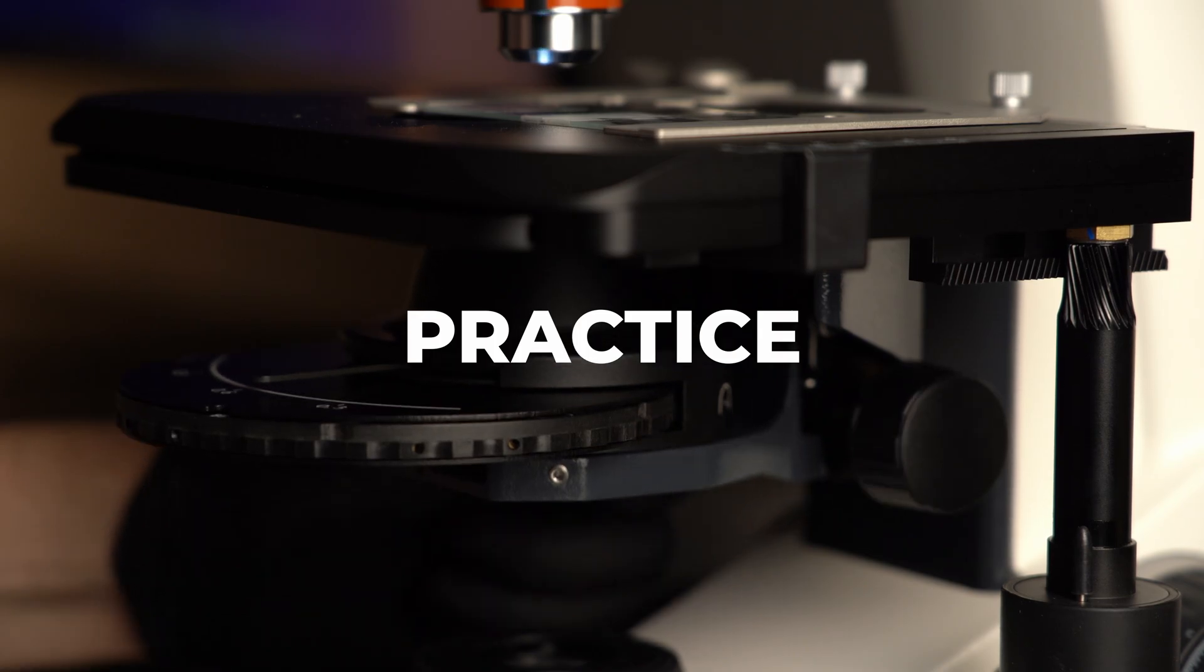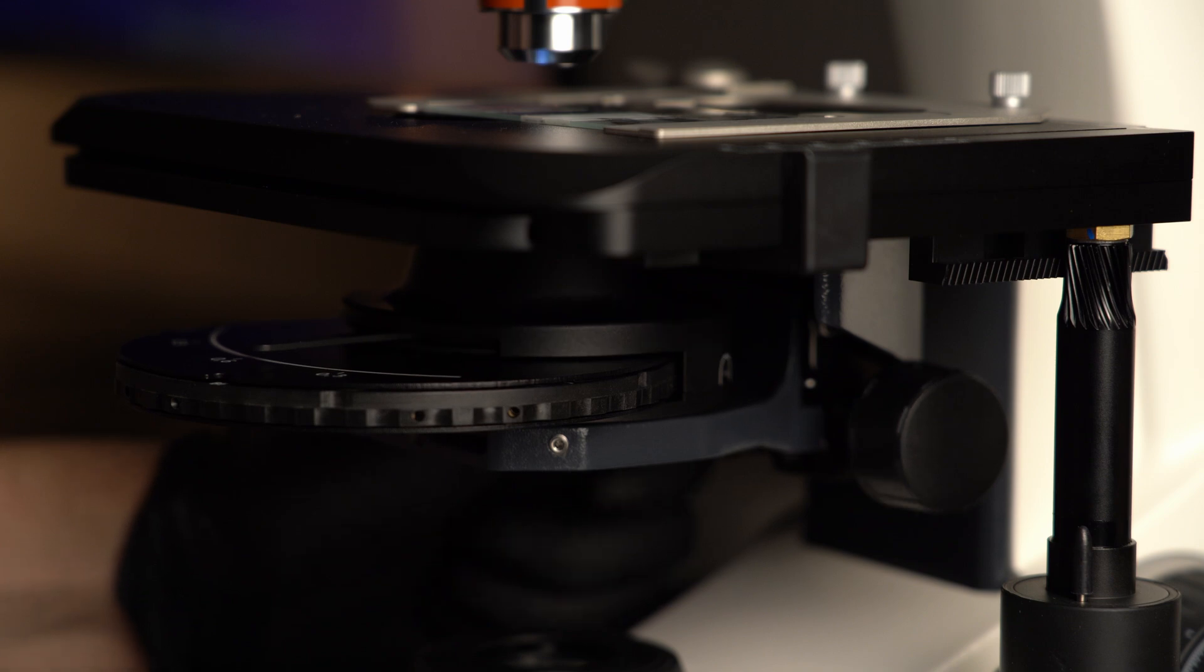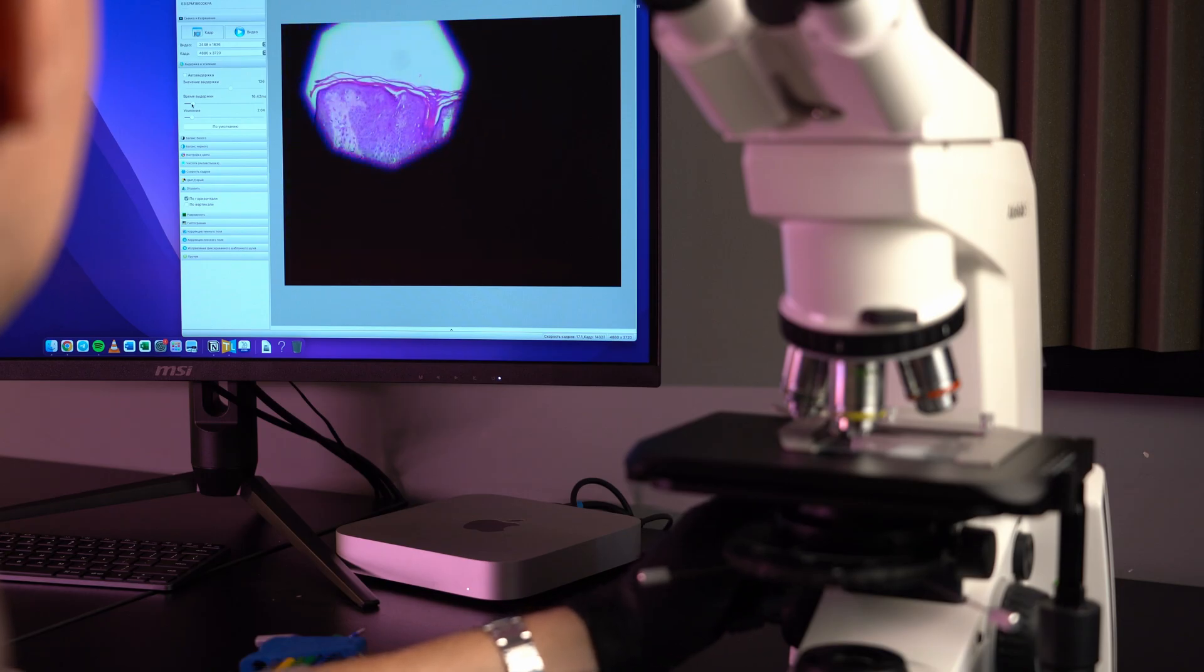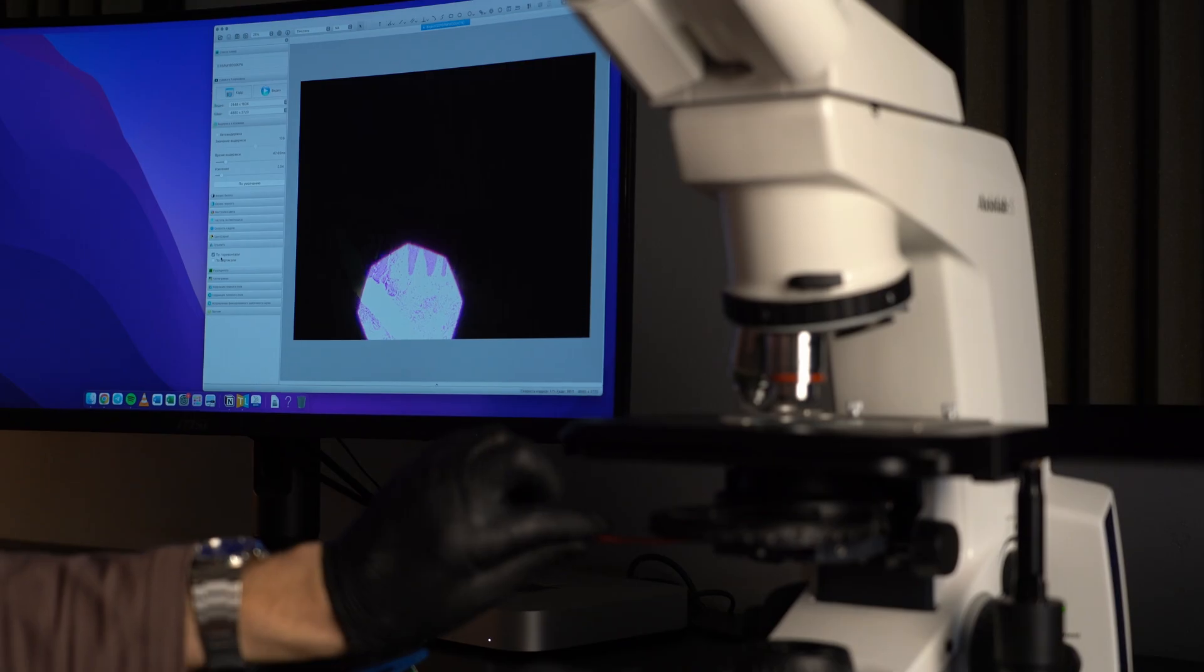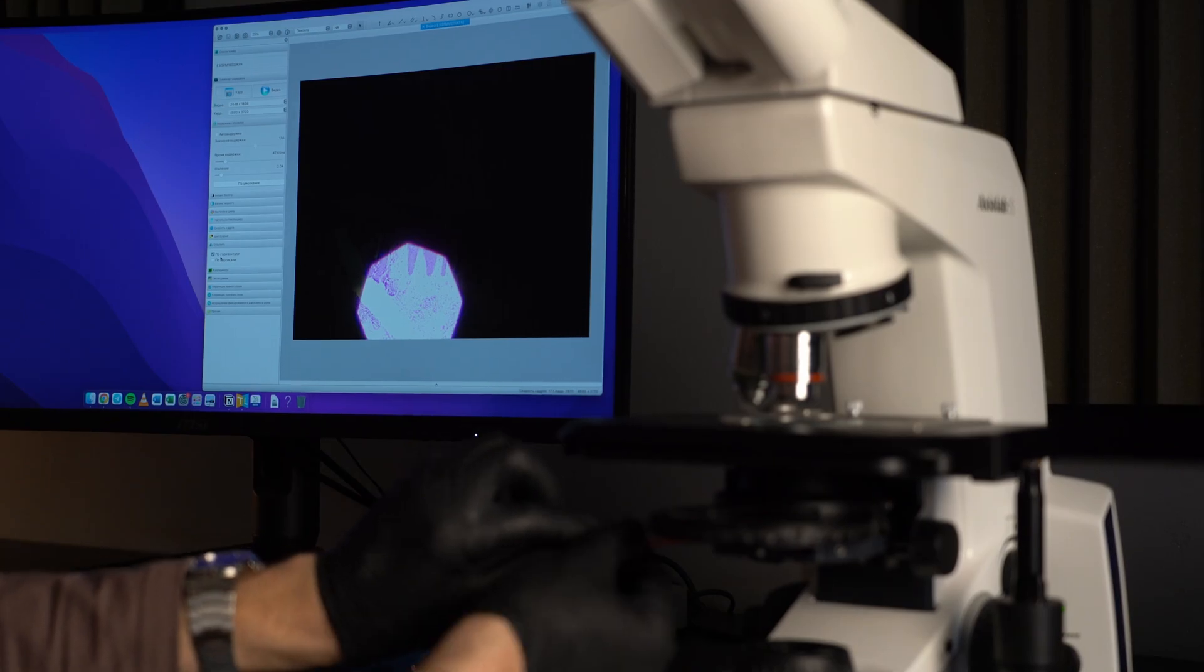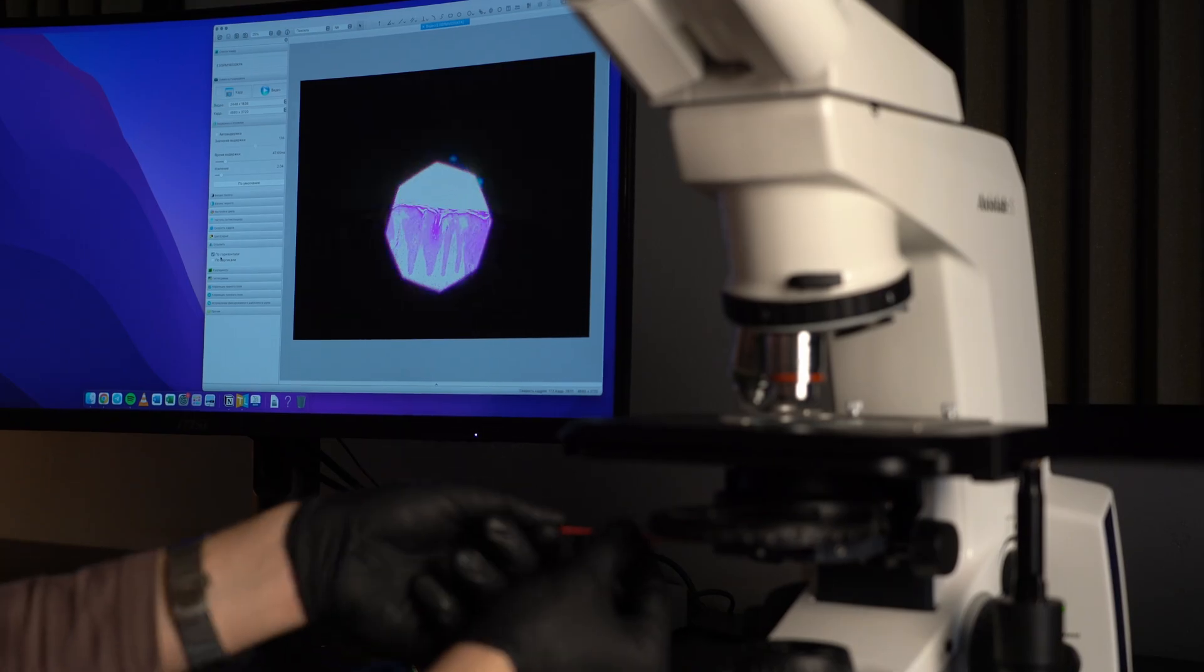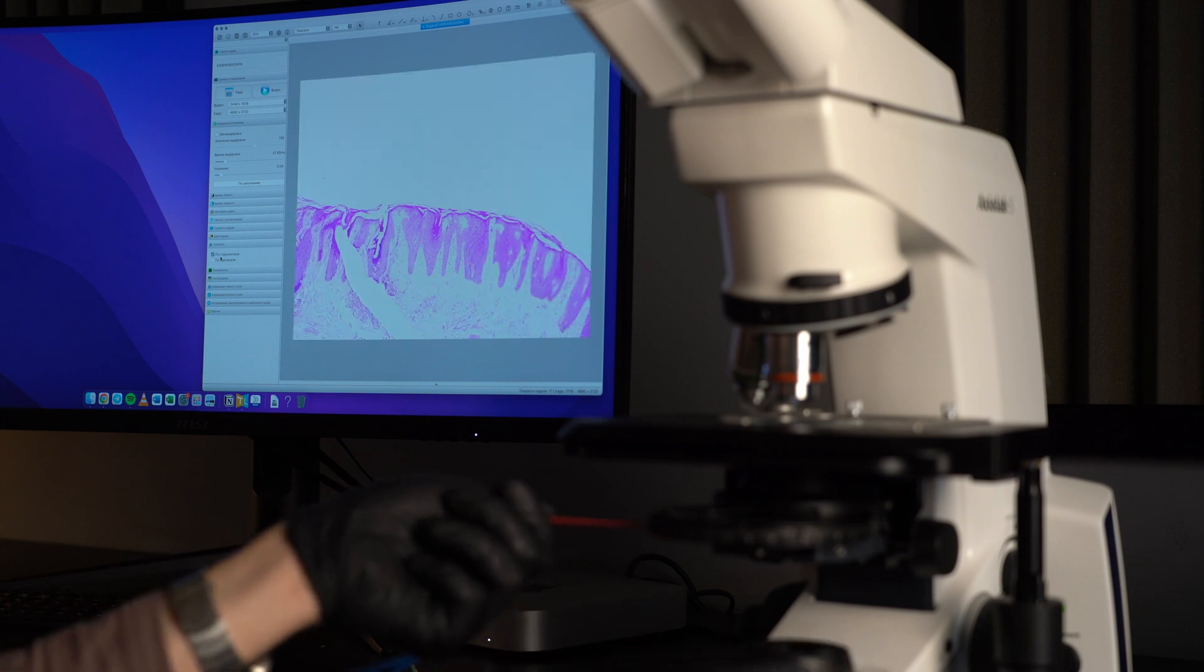Let's set up our microscope for phase contrast step by step. First – Koehler illumination. If you need to know more information about Koehler illumination setup please check the video on my channel. The main point is to adjust the condenser coaxial with the objective and in the right focus plane.